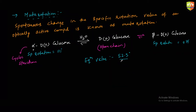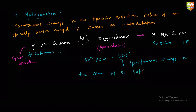So mutarotation is a spontaneous change in the value of specific rotation before achieving equilibrium. The equilibrium value here is 52.5 degrees. Got it? Yes sir.